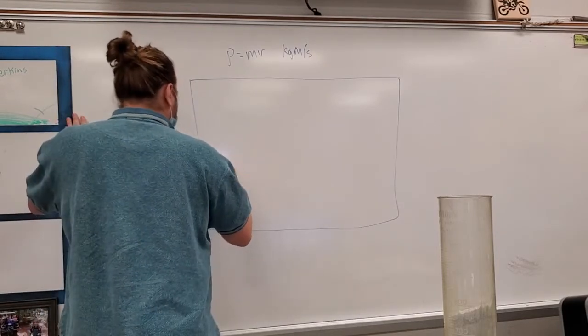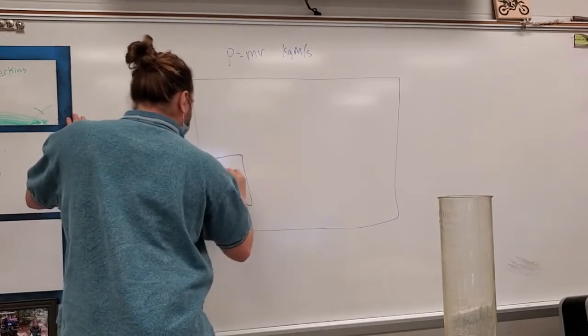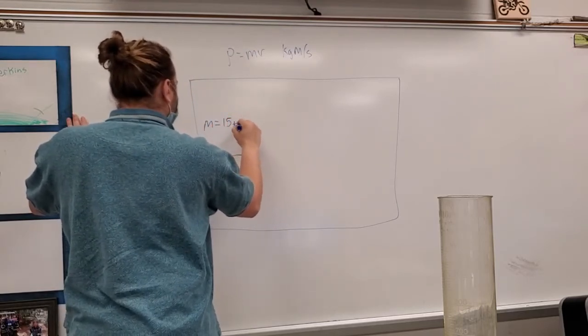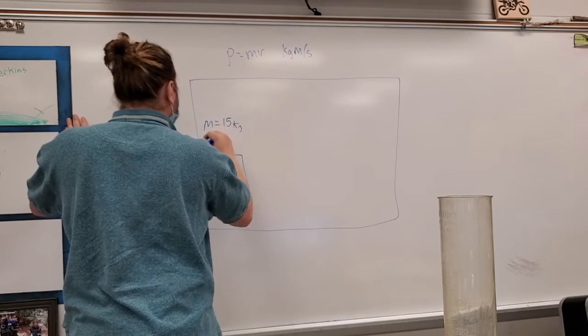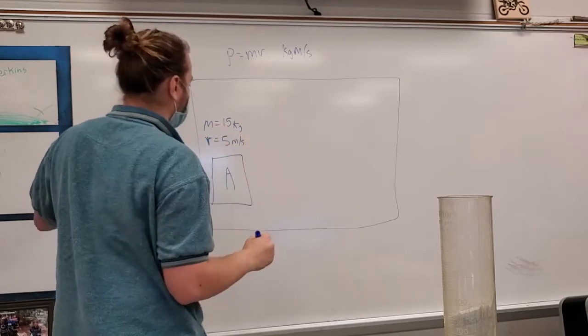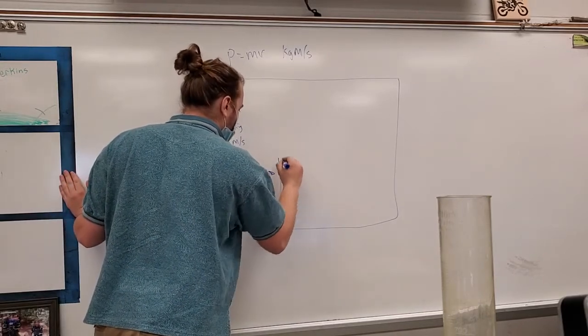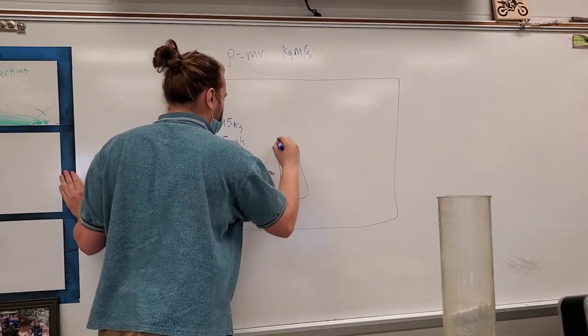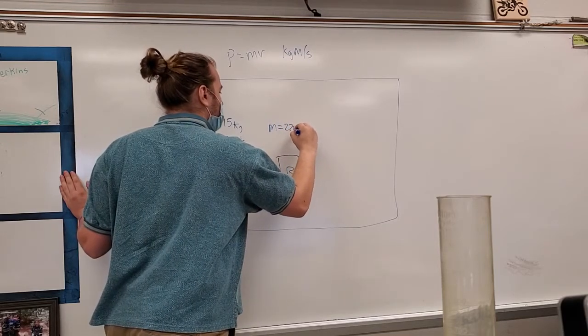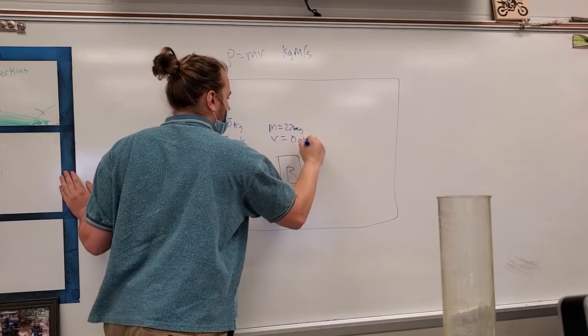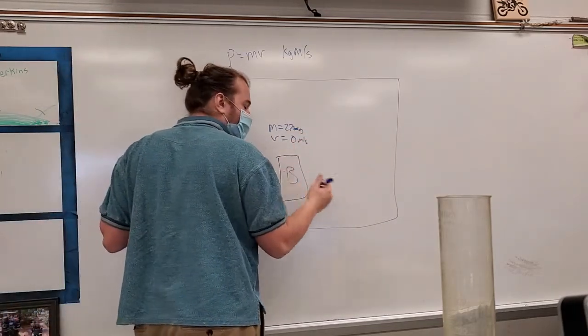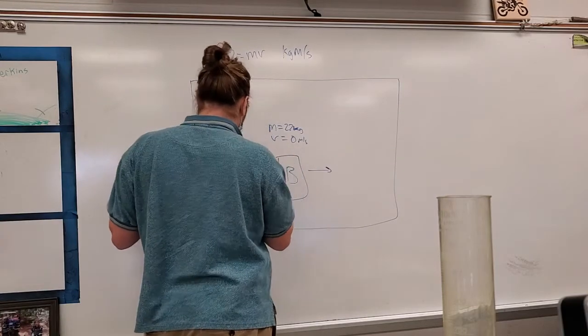Now let's say we have some mass A. Let's say mass A is 15 kilograms and has a velocity equal to 5 meters per second. We'll say it runs into mass B, which is 22 kilograms, but has a velocity equal to 0 meters per second. They stick together. So here's our initial.